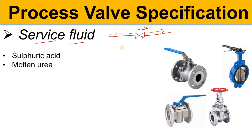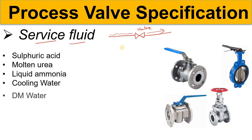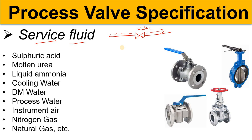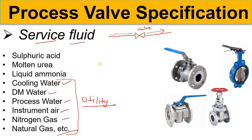The service fluid could be sulfuric acid, molten urea, liquid ammonia, cooling water, DM water, process water, and so on. It depends on the industry as to which type of service fluid you are using. Cooling water, natural gas, or nitrogen gas are utilities used in almost every project. If a valve is being used in the cooling water line, you give the information about the service fluid for that valve — we will discuss the other technical details later.